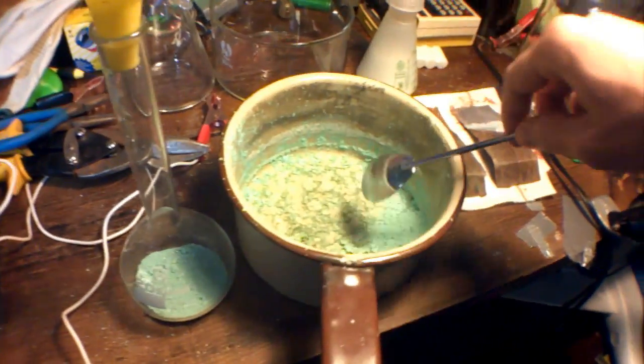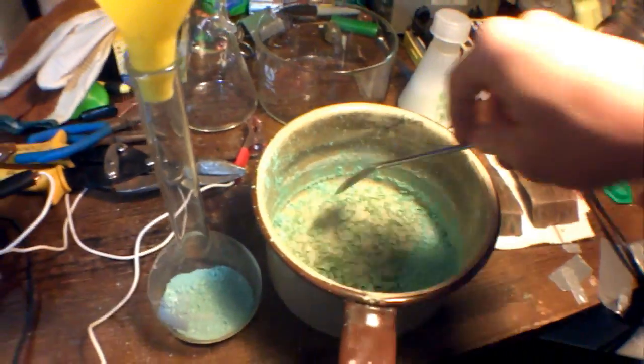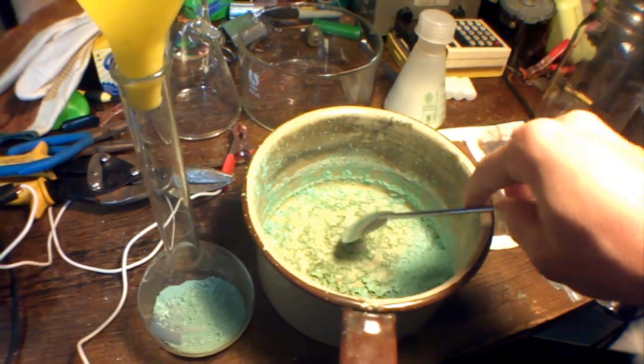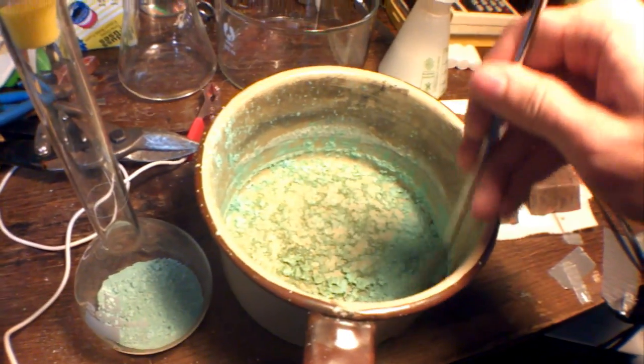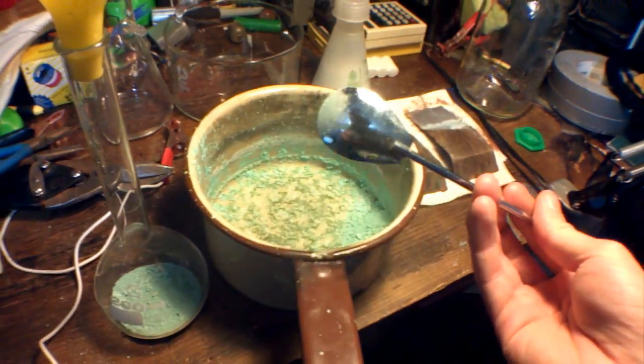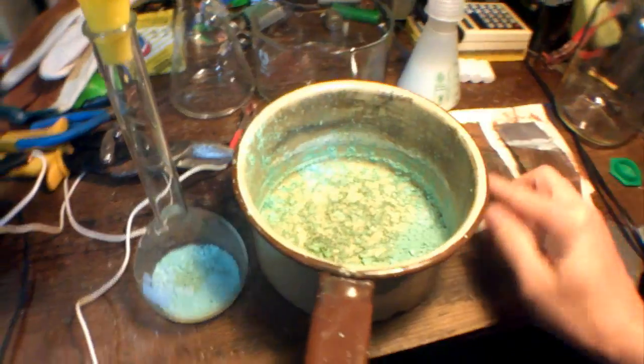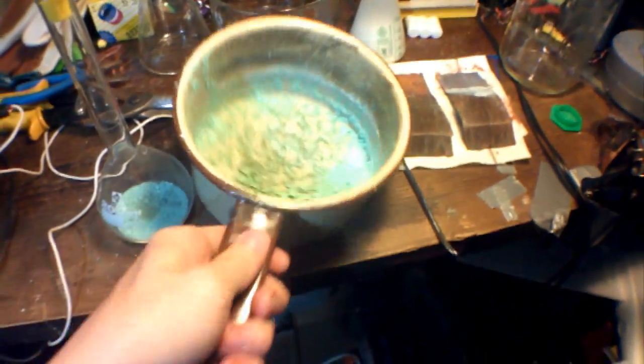I crushed the copper hydroxide. First, I scraped it off, trying not to get much of the copper oxide—the dark green stuff. Then I mashed it up against the side with the blunt side, and that broke up a lot of the chunks and reduced it to a nice little powder.